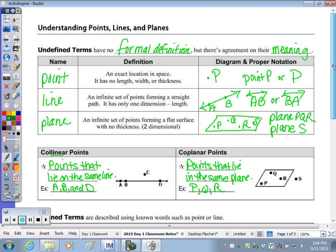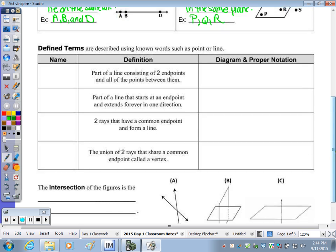Our defined terms are terms that we describe using words such as point, line, or plane. So when I go to define line segment, for instance, ray, angle, those are three terms. You're going to have one that's blank.